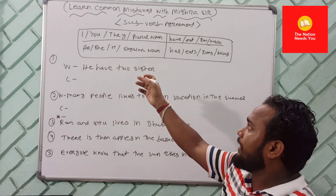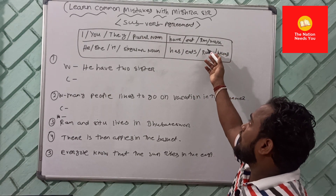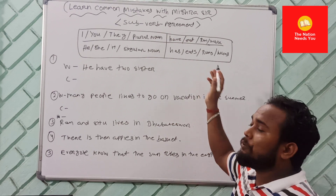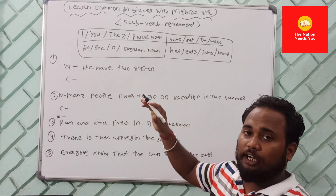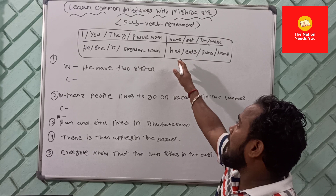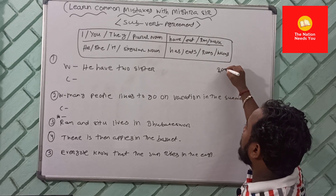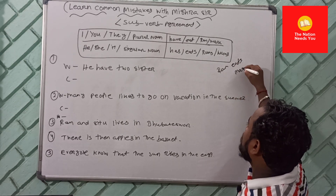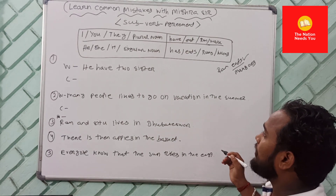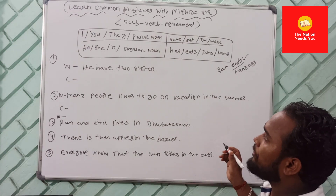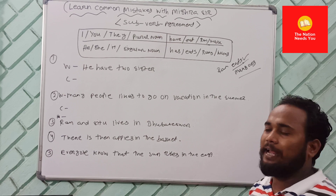Here is the rule: if you have a subject like I, you, or they — plural subjects — you are going to use 'have,' 'run,' 'work' with no changes to the verb. But if you have a subject such as he, she, or any singular noun, you are going to use 'has.' For example, Ram is singular, so we say 'Ram has mangoes.'